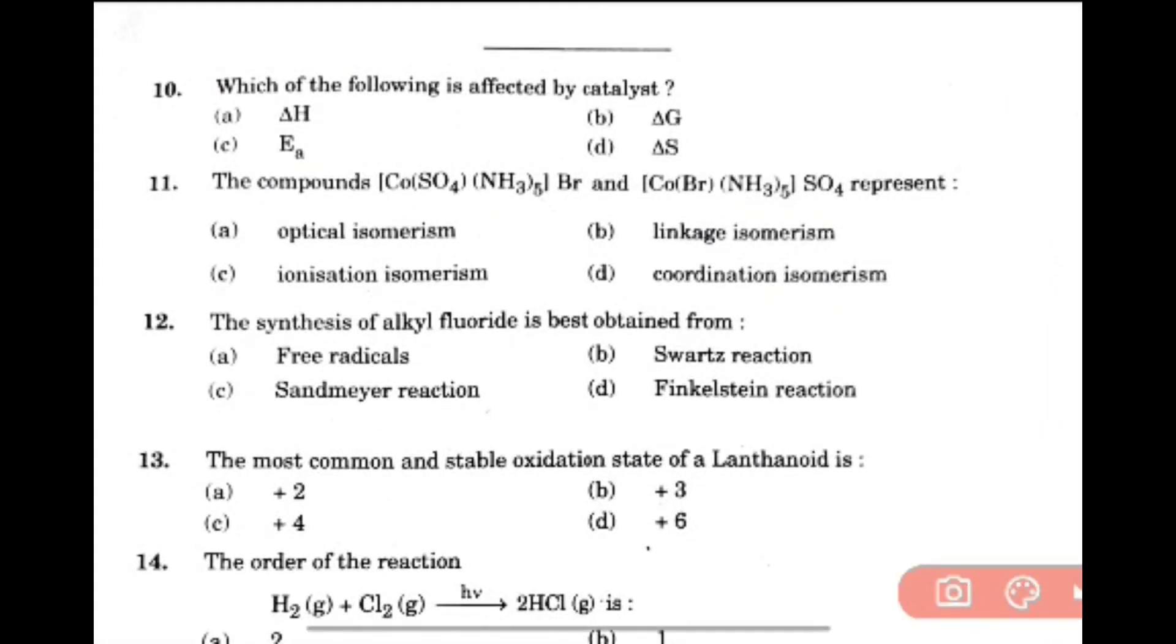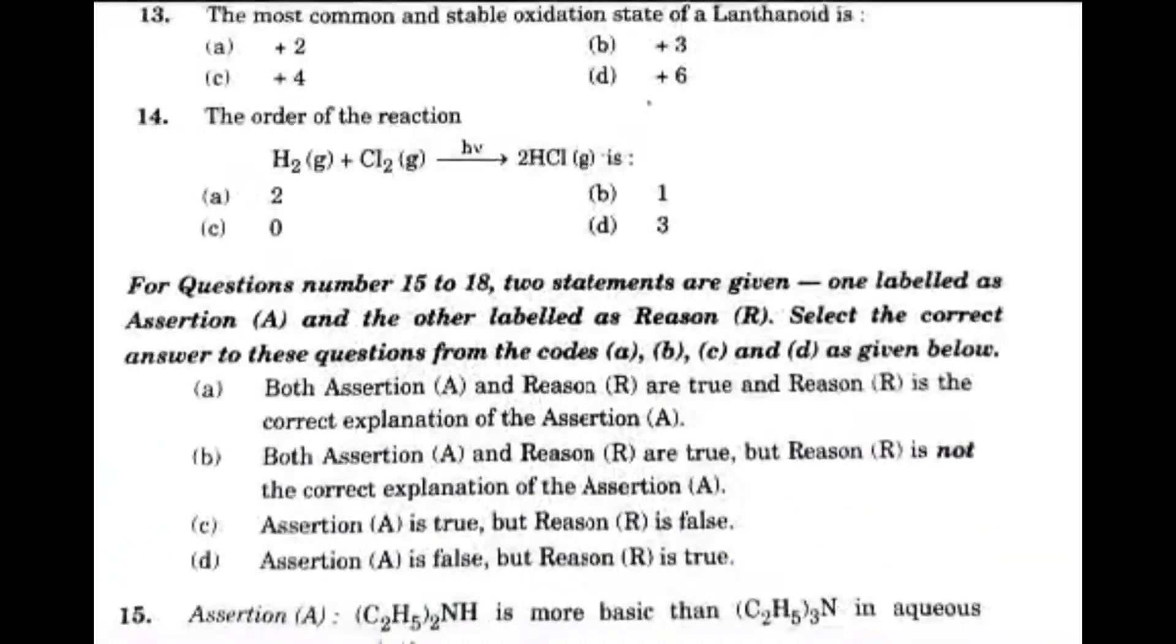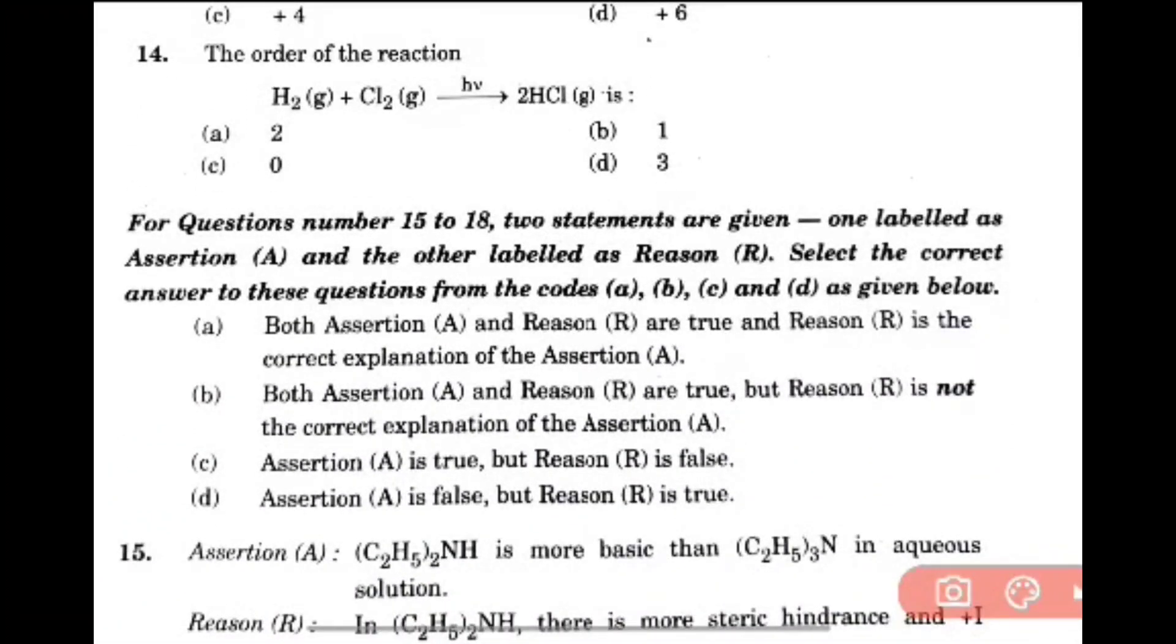Question 10: Which of the following is affected by catalyst? That is option C, activation energy. Question 11: The compound that shows ionization isomerism. Question 12: Synthesis of alkyl fluoride is best obtained by Swartz reaction. Most common stable oxidation state of lanthanoid is plus 3. Question 13: Order of the reaction H2 plus Cl2 gives 2HCl, that is option C, zero order reaction.